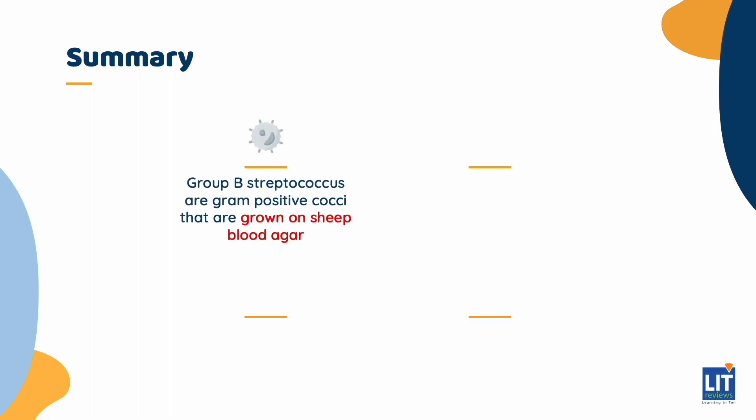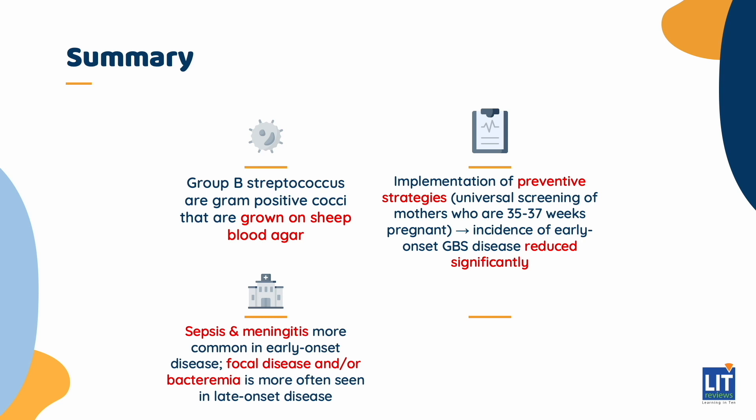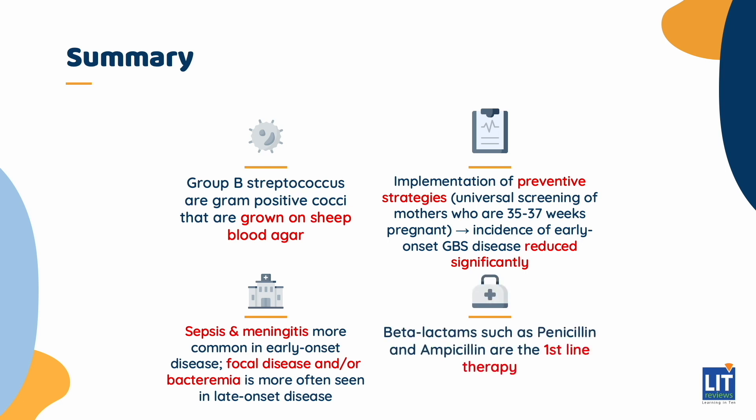In summary, Group B Streptococcus are gram-positive cocci grown on sheep blood agar. The incidence of early-onset GBS disease has been reduced significantly after implementation of preventive strategies including universal screening of mothers at 35 to 37 weeks. However, the incidence of late-onset GBS remains the same. Sepsis and meningitis are more common in early-onset disease, while focal disease and bacteremia are more often seen in late-onset disease. Beta-lactams such as penicillin and ampicillin are the first-line therapy.